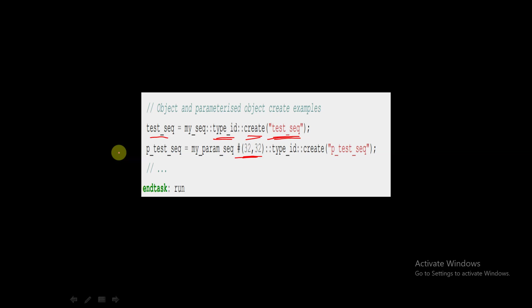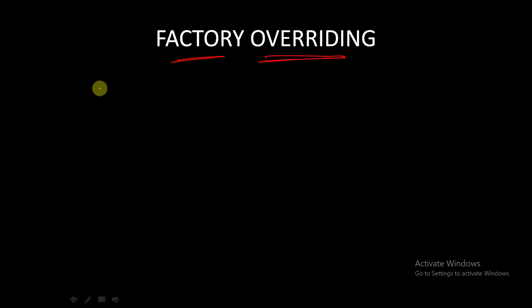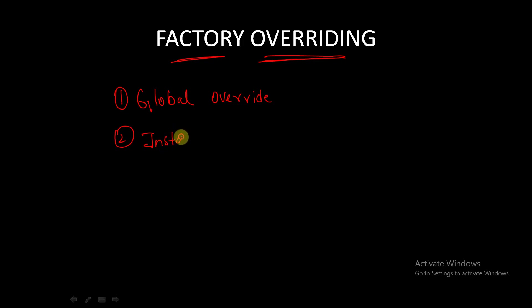Now let's look at factory overriding. We discussed the concept theoretically — why it is helpful — but now let's see how to achieve it. There are two types of factory overriding: the first is global override, and the second is instance override.